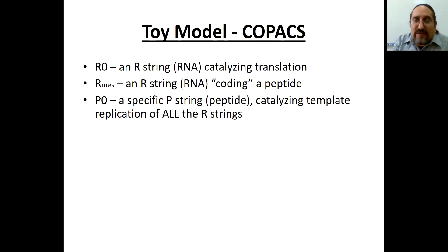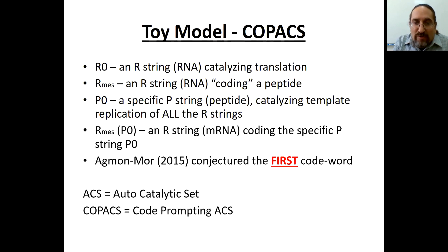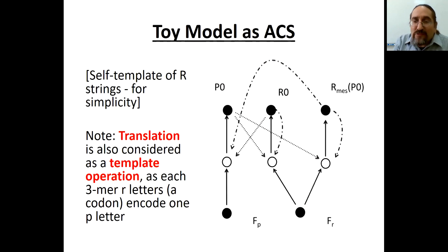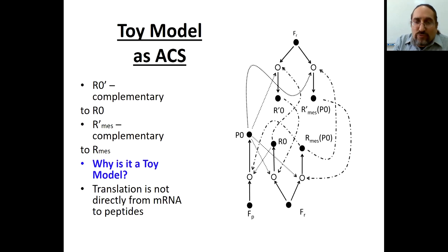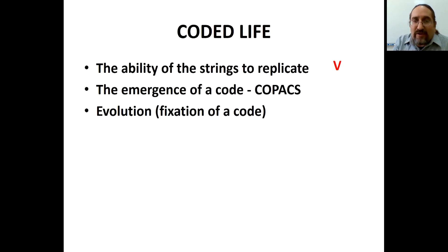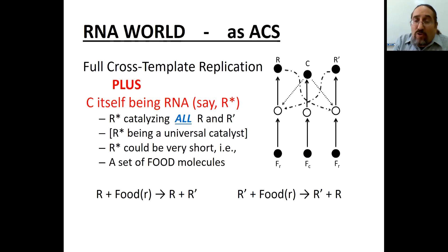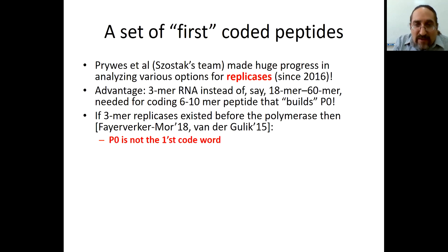In a toy model presented in 2015 with Ilana Agmon, we suggested that the polymerase is the first peptide and is the one that enables template replication. Then in 2018, we relied on work from the Szostak group by Noam Priwes, which suggested that RNA could be the catalyst for template replication of RNA strings. We then had options for other strings being the first peptides.